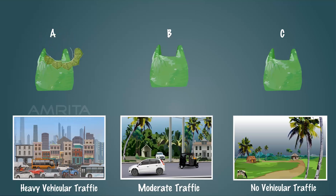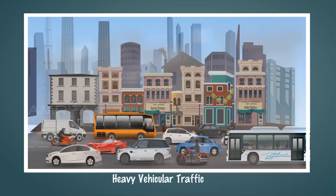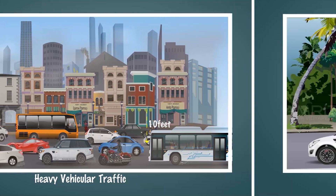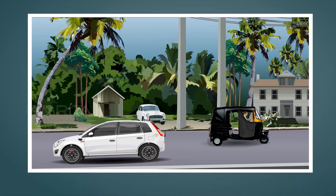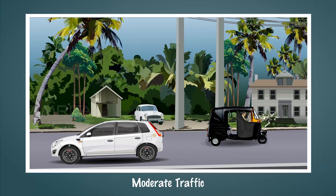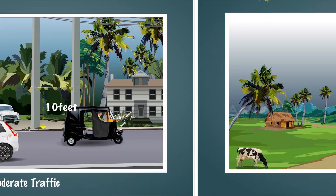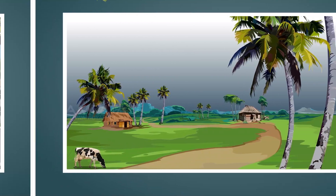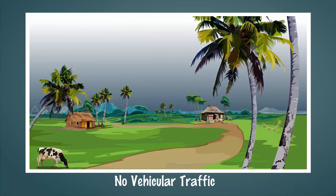At the spot with heavy vehicular traffic, expose each leaf of bundle A by stretching the attached thread and tie the two ends to two poles at 10 feet height above ground. Similarly, expose leaf bundle B at the moderate traffic spot and leaf bundle C at the no vehicular traffic spot.